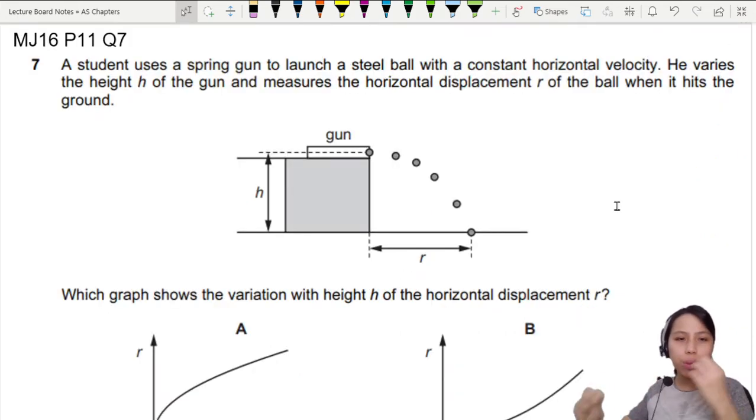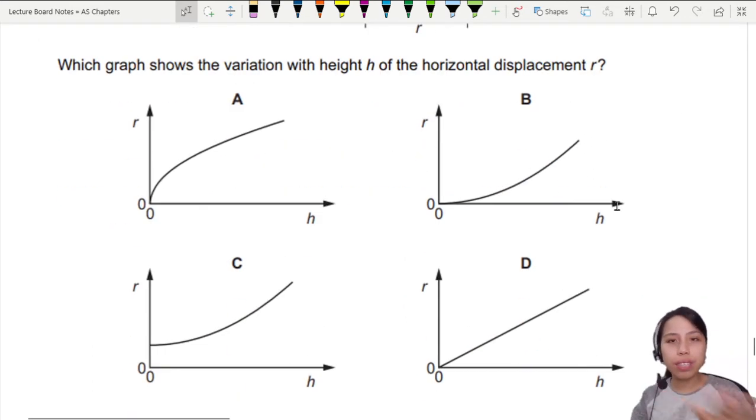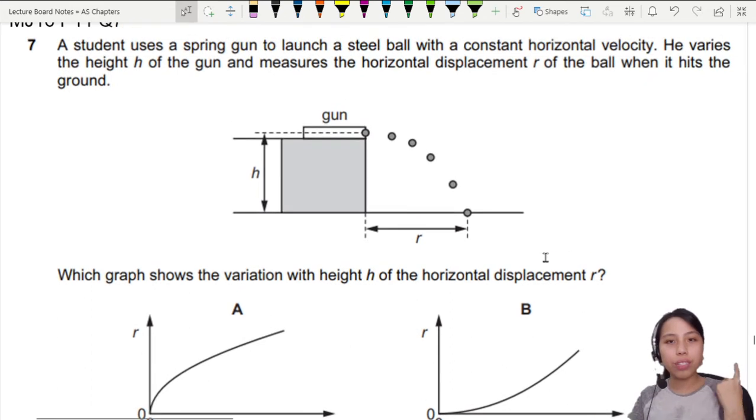But sometimes they may give you some weird graph and you're like, teacher never talked about this before, I cannot do already. Well, other than just guessing the answer, I'm going to show you a method which involves some equations. This method can be used for all kinds of physics graph questions to know what is the correct shape between this R and this H. What is R and H? Let's read the question.